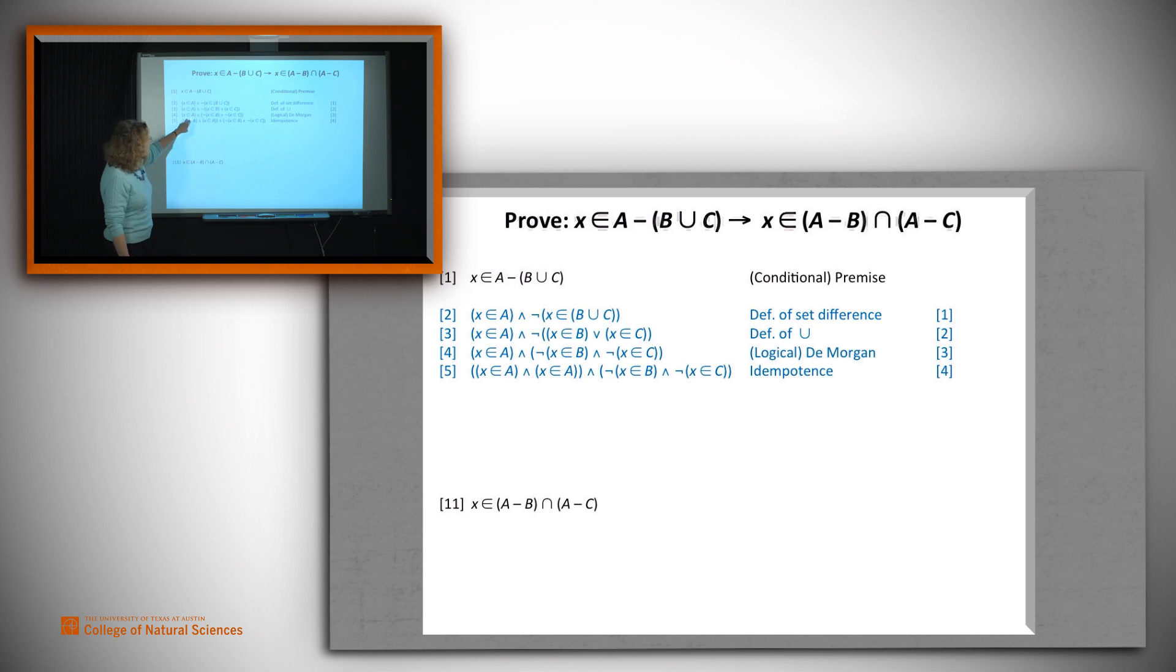So we do a step that maybe seems silly, but it gets us towards our goal. Idempotence tells us that if we've got x as an element of A, then we can have, in fact, if we have any claim, we can have that claim and itself. Changes the truth value not at all. So we're going to add a second mention of A. x is an element of A and x is an element of A. Now we have two As, a B and a C. They're not in the right order.